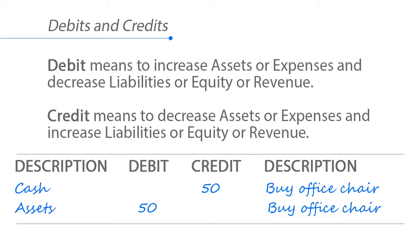One easy way to remember cash and debit is to think of your debit card from the bank. A debit card means you already have money that you can use — that's why it's called a debit card. Adding more money to your bank account actually increases your cash, which is a debit. So debit is an increase in cash — that's an easy way to remember debits with cash.